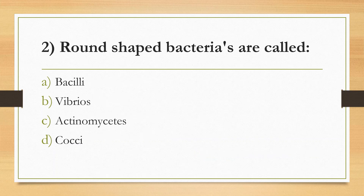Second Question: Round-shaped bacteria are called — Option A: Bacilli, Option B: Vibrios, Option C: Actinomycetes, Option D: Cocci. Answer is Option D: Cocci. Bacilli are rod-shaped; Vibrios are curved/comma-shaped. Actinomycetes can sometimes form rod-shaped or coccoid forms and have filamentous growth patterns.